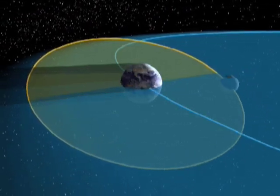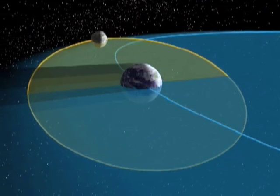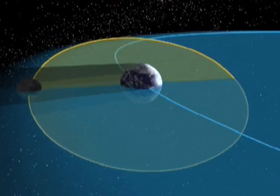This special alignment is only possible during the so-called eclipse seasons, which happen about every six months.